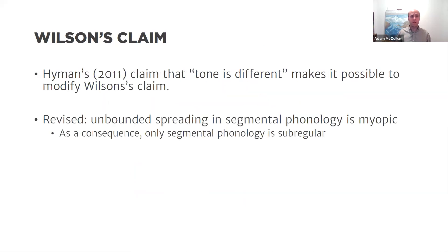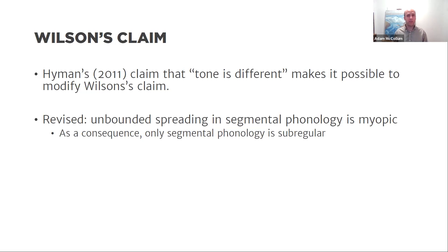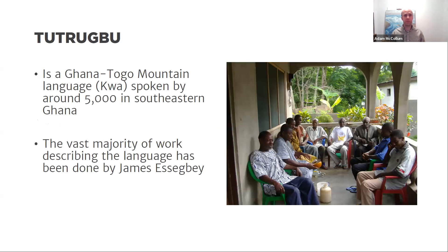One might follow Hyman and say tone is different — there's something special about tone and how it interacts with prosody and syntax — and make the restricted claim that unbounded spreading in segmental phonology is myopic and consequently sub-regular. That's one possible claim based on Jardine's data and its counter-example to the sub-regular hypothesis. And that's where Tutrugbu comes in.